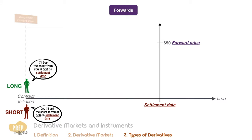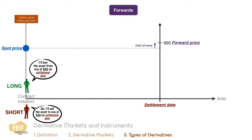Neither party makes a payment at this point. The forward price is based on the current market price of the asset, also known as the spot price, adjusted by the cost of carry of the asset. We shall learn more about the pricing mechanism in a future lesson. Once the contract is initiated, it becomes locked in as the contract price.